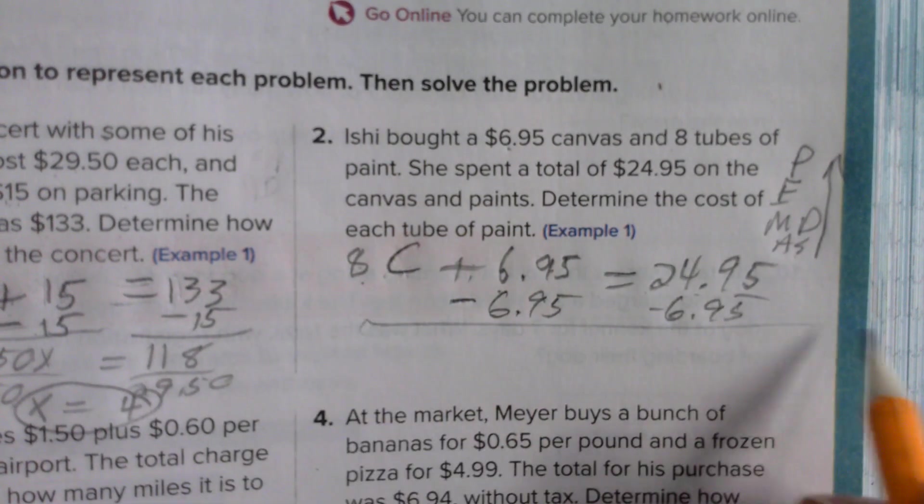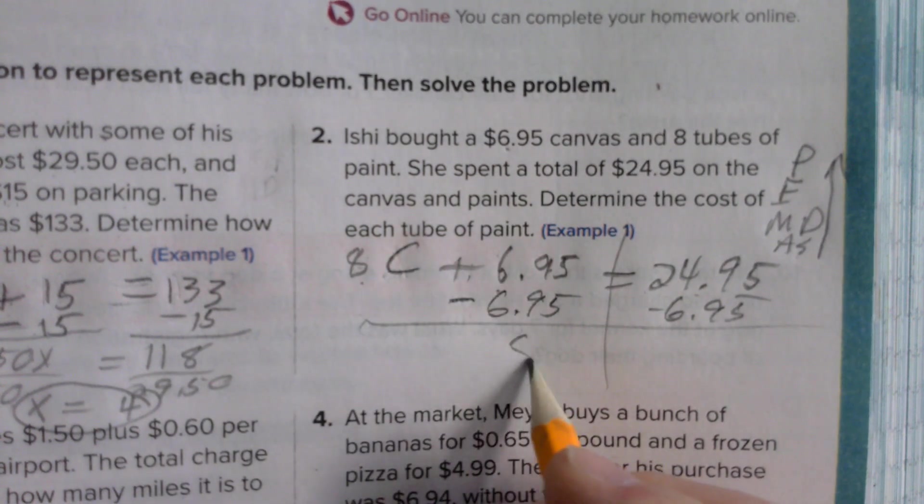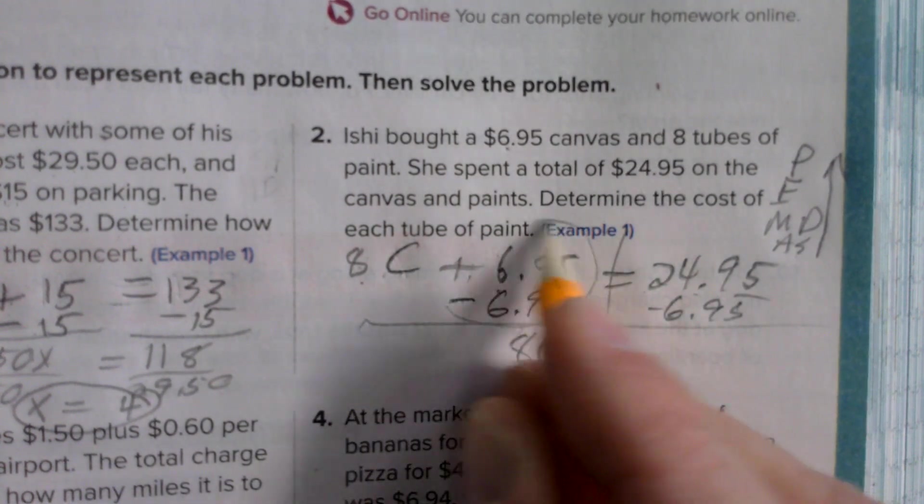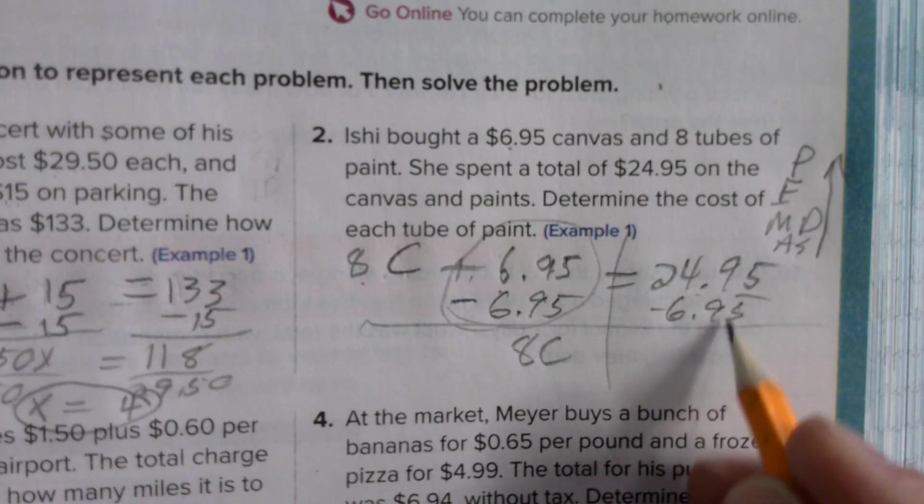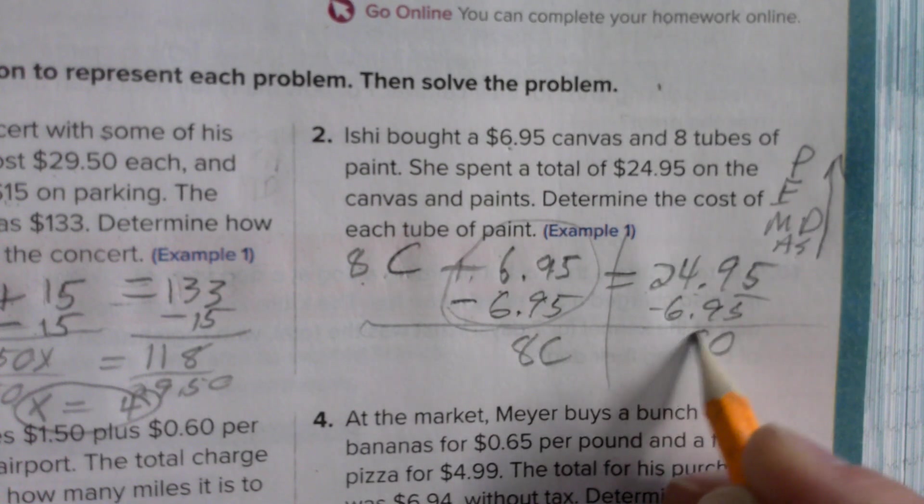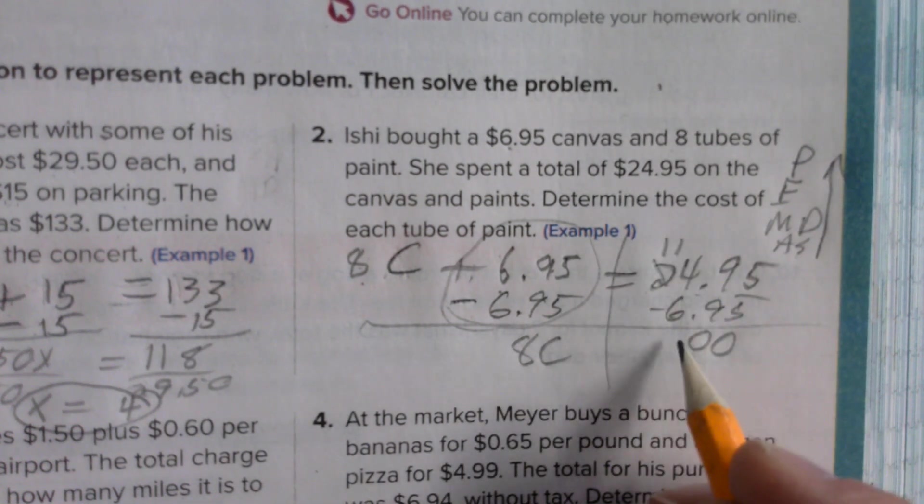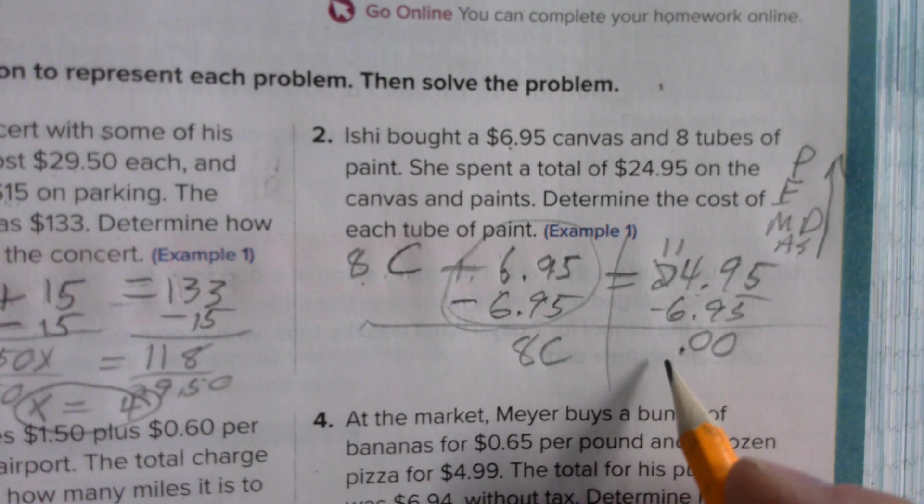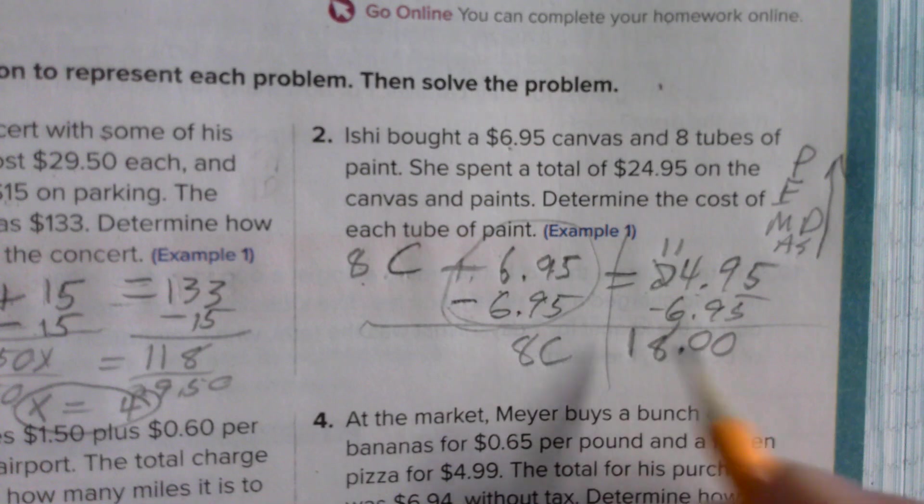When I subtract 6.95 from both sides, I'm left with 8C plus 6.95 minus 6.95, which is simply 8C. That's the whole reason I did that. Those cancel. And then over here, 95 cents minus 95 cents is zero. 24 minus 6, this would be 14 minus 6 is 8, and 1 minus 0 is 1. I get $18.00, so 8C equals 18.